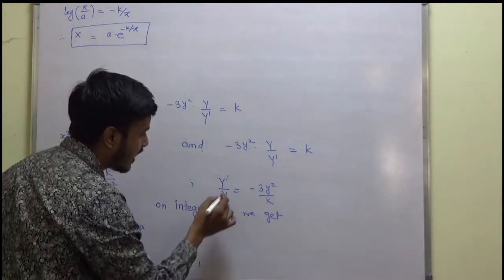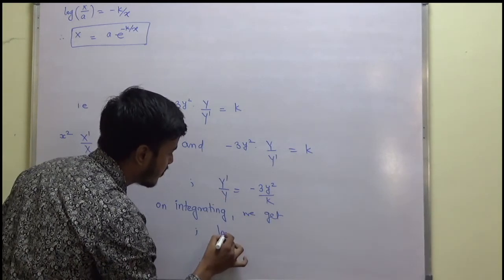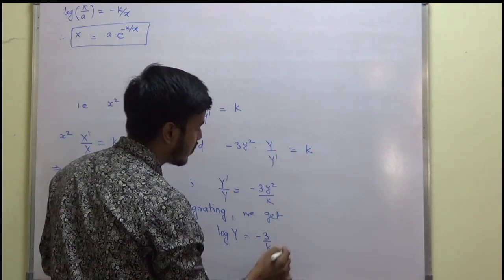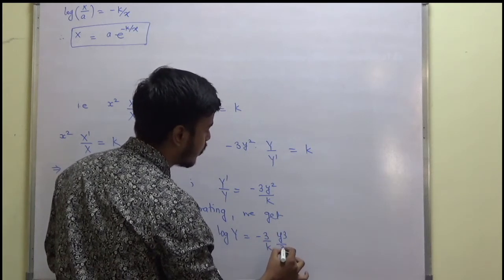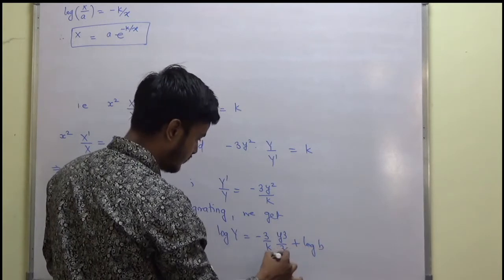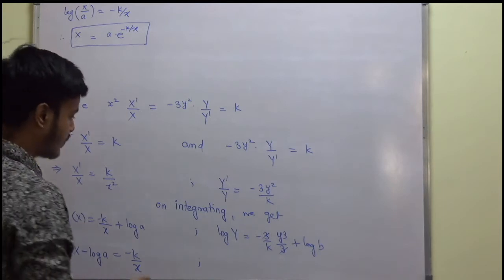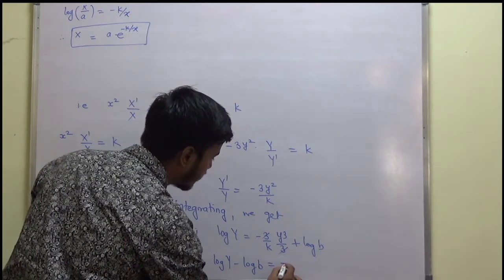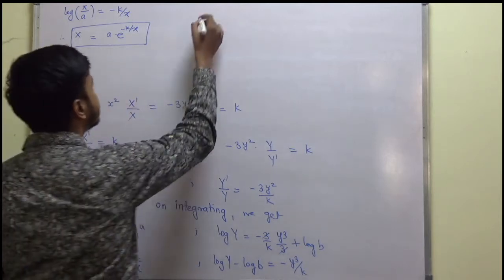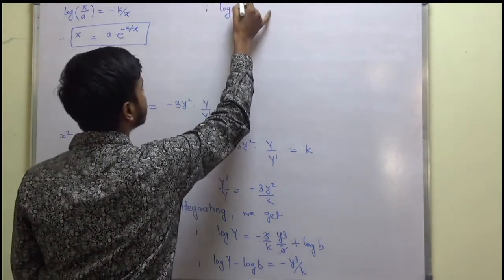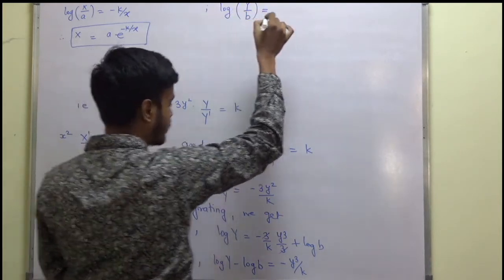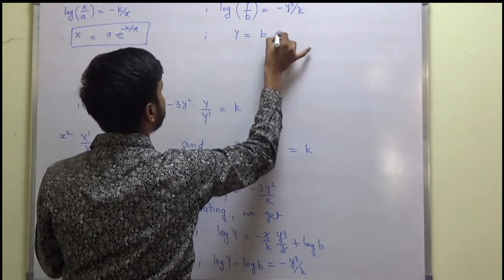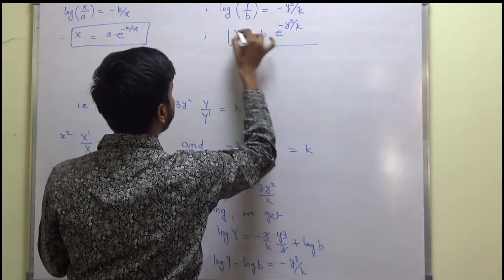From Y'/Y = -3y²/k, integrating both sides: log Y = -3/k · (y³/3) + log b = -y³/k + log b. So log(Y/b) = -y³/k, giving Y = b · e^(-y³/k). This is the second independent solution.